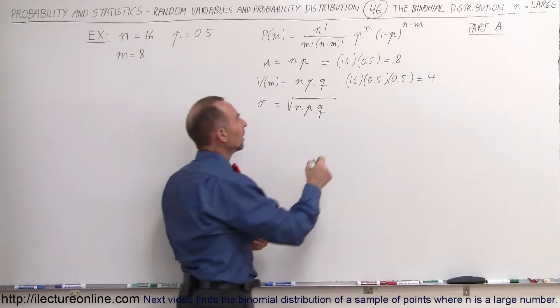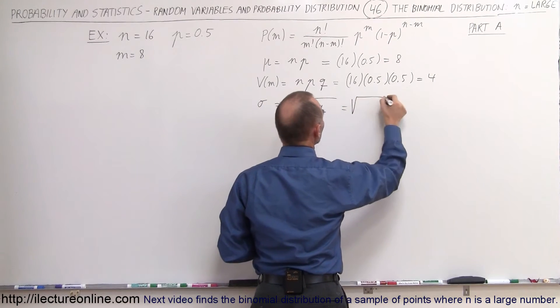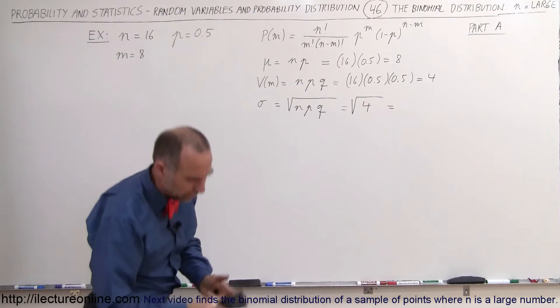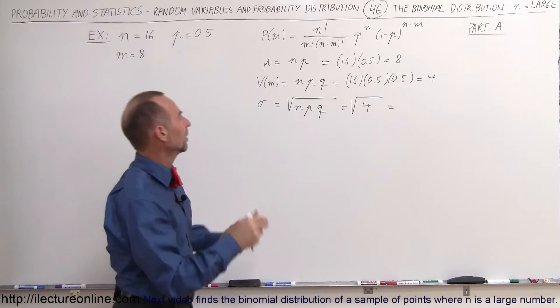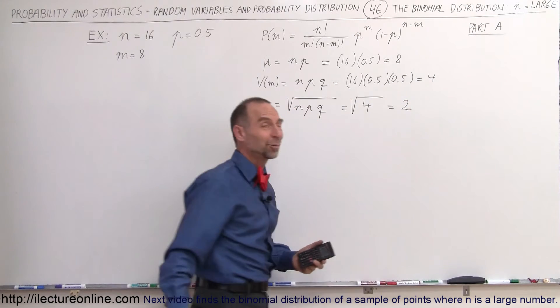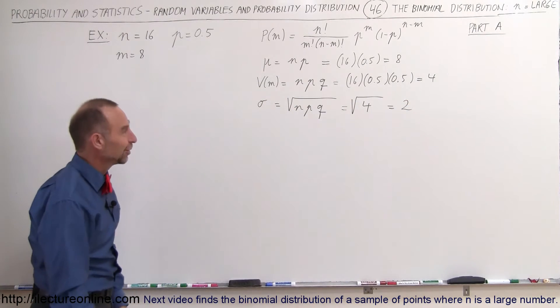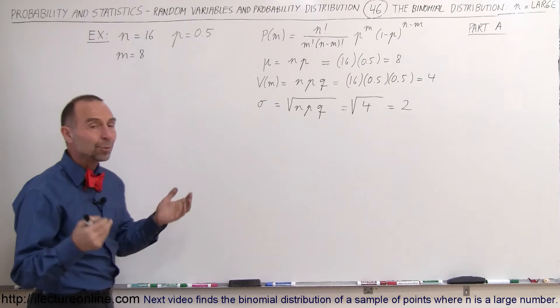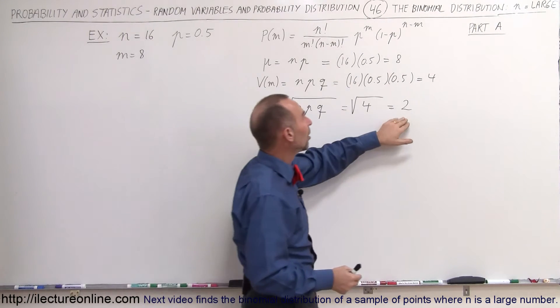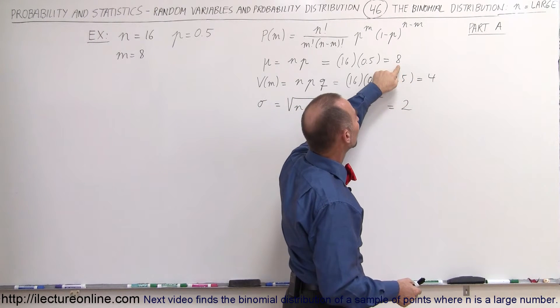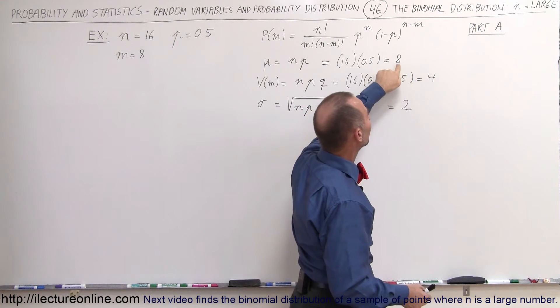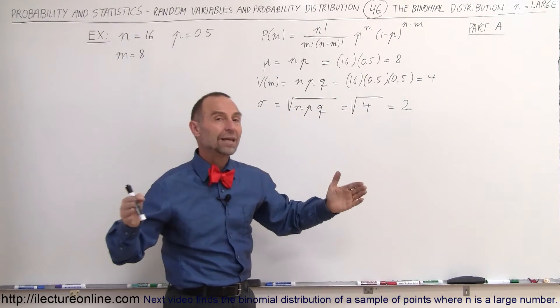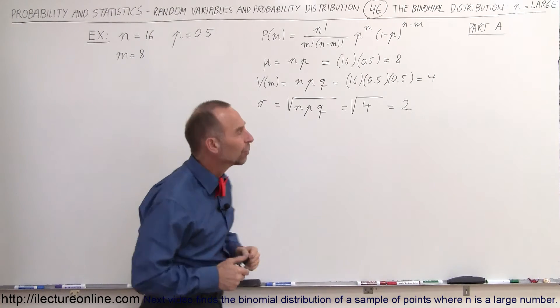Looking for the standard deviation, that would be equal to the square root of the variance, which is equal to the square root of 4, which equals 2. Which means that 99.7% of all the values would fall within plus or minus 3 sigma, which would mean between 8 plus 6 is 14, and 8 minus 6 is 2. So almost all the values should lie between m equals 2 and m equals 14.